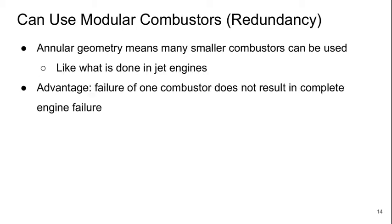Another advantage of the central spike type design is that we can use modular combustors which add redundancy. Because we've got an annular geometry, it's a bit more like a jet engine — we can have a series of small combustors around the annulus instead of one large combustion chamber. The advantage here is that if one combustion chamber fails for some reason, it does not result in complete engine failure.